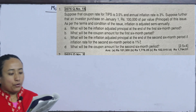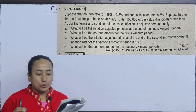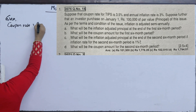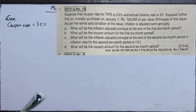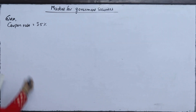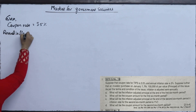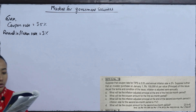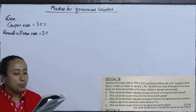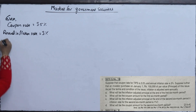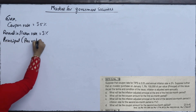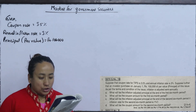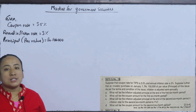Suppose the coupon rate for TIPS is 3.5% and the annual inflation rate is 3%. Further, suppose that an investor purchases on January 1st rupees 1 lakh of par value — that is, 1 lakh of principal — as per the terms and condition of the issue.